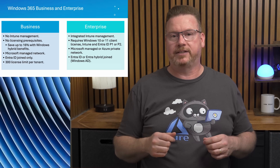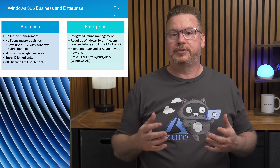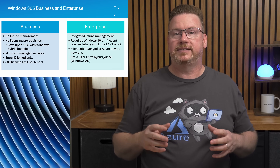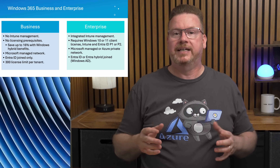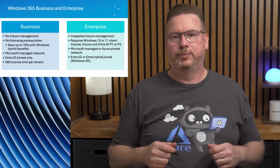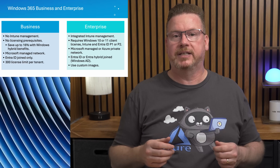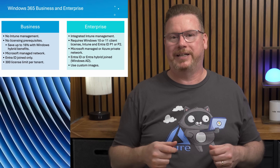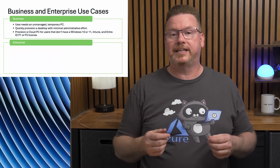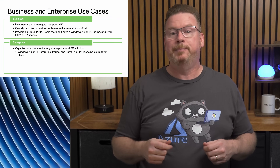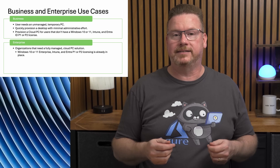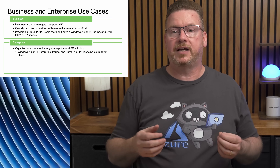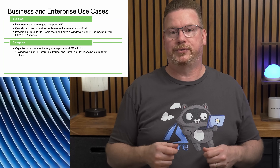The Enterprise cloud PC can be Entra ID joined or Entra hybrid joined to a traditional Windows Active Directory. When Active Directory joined, the cloud PC requires hybrid join using Entra Connect Sync or Entra DS — note that the Microsoft-managed Active Directory service is not supported with Windows 365. We also have the option to use custom images with Enterprise; the cloud PC can be built from an image with custom settings and applications already installed.